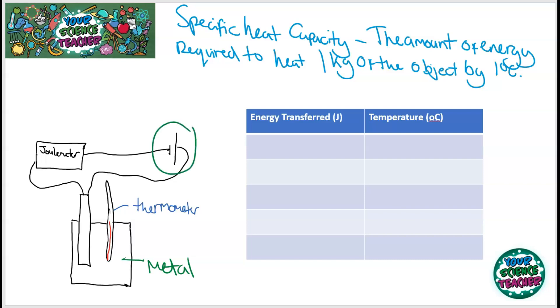And you'll have a power pack attached to a joule meter and a heater and a thermometer here, which is a temperature. What you need to do in the practical is take a starting temperature and see how much the temperature rises every minute and write the energy transferred in that time.